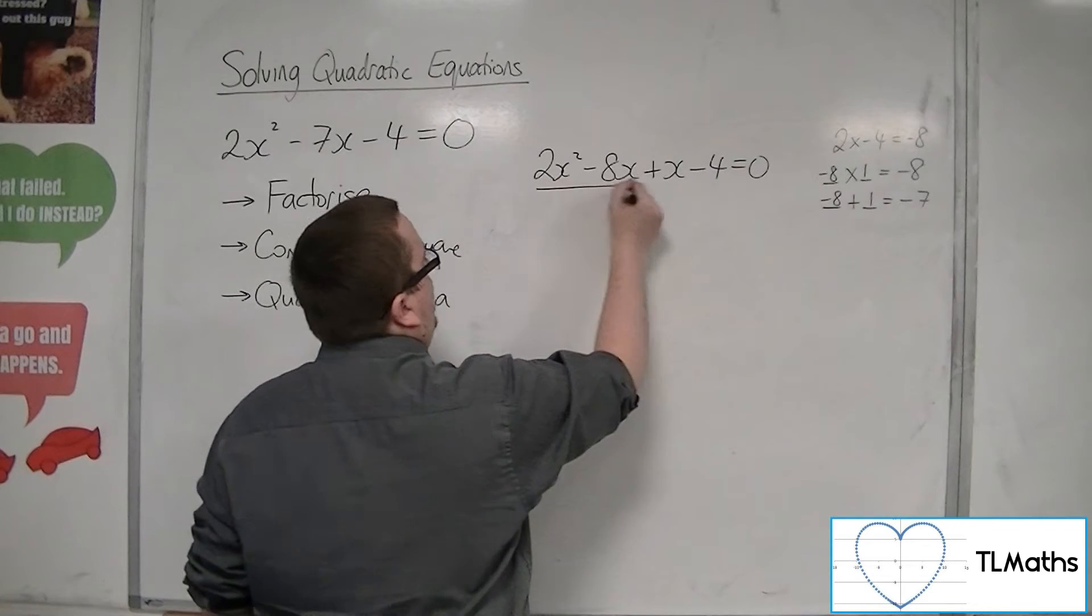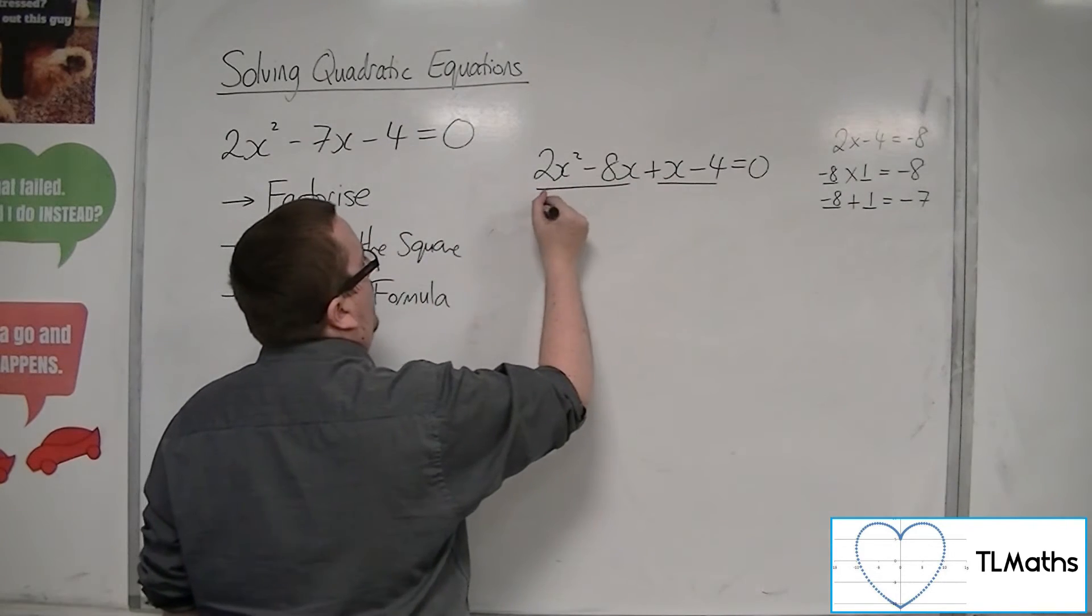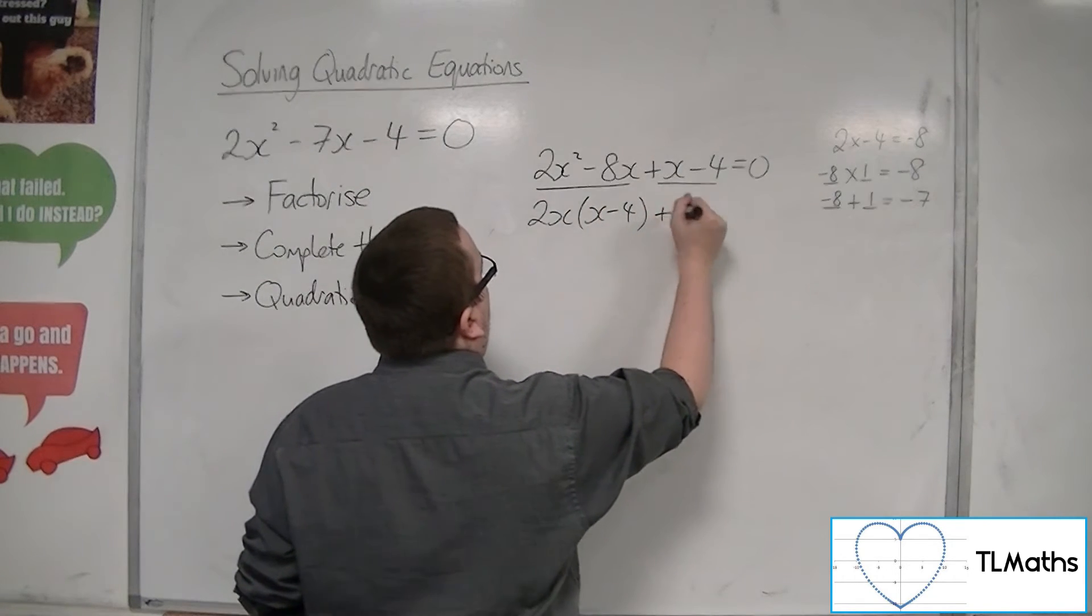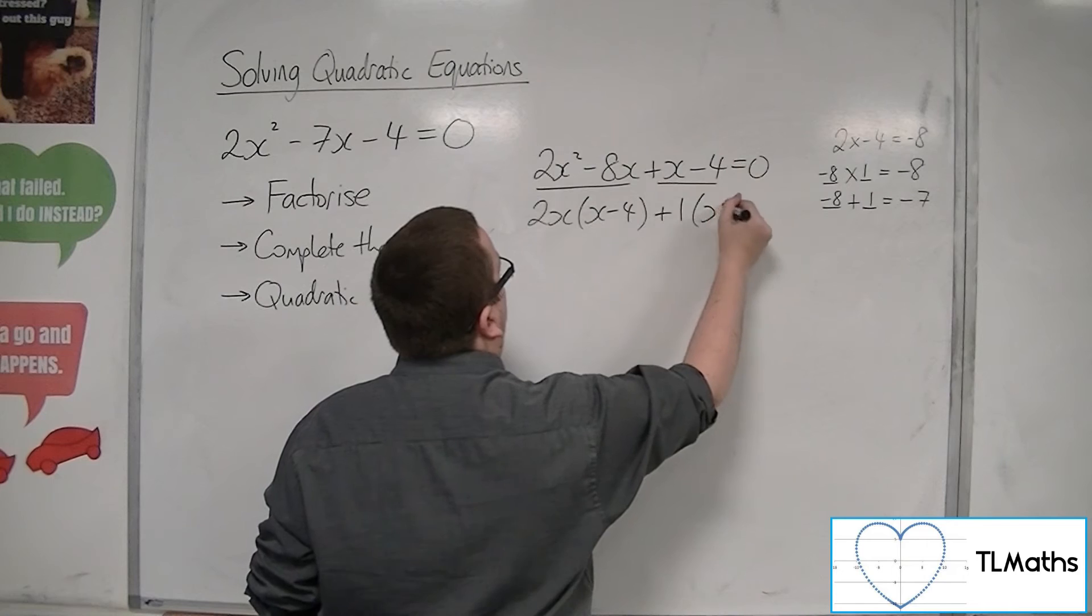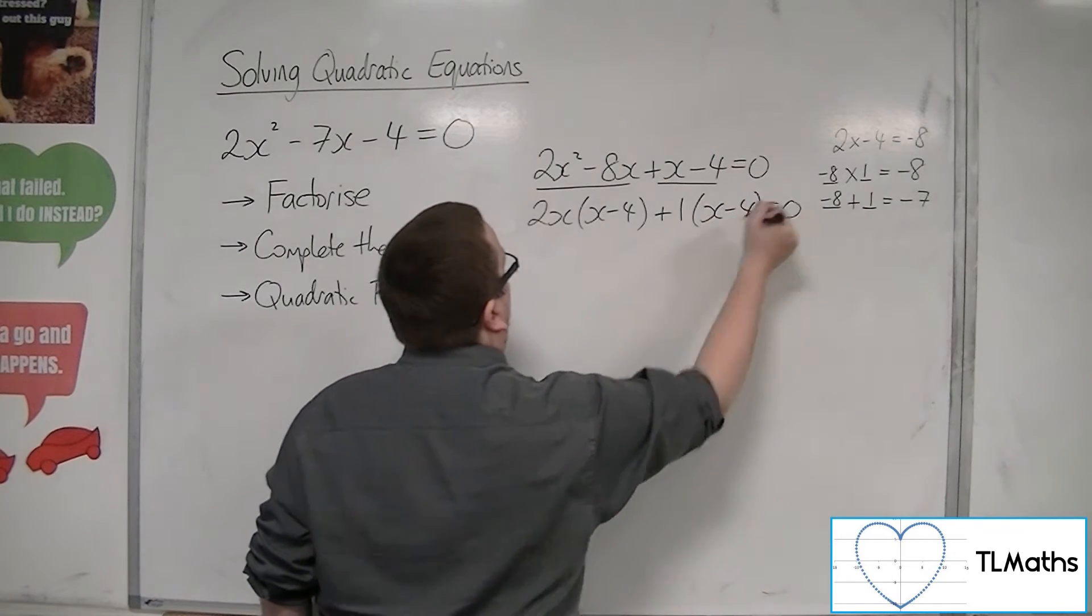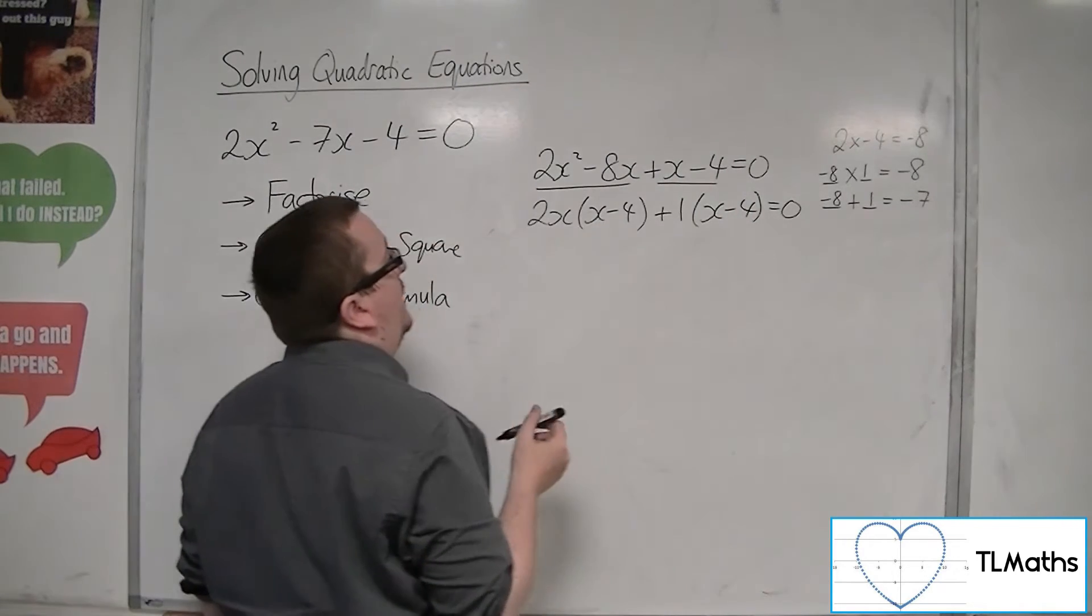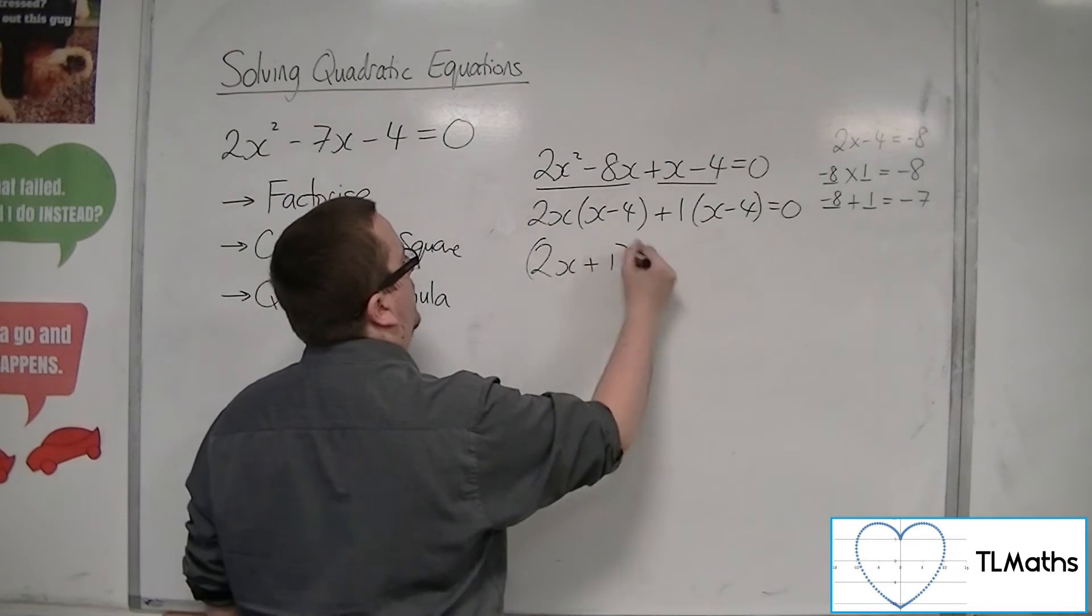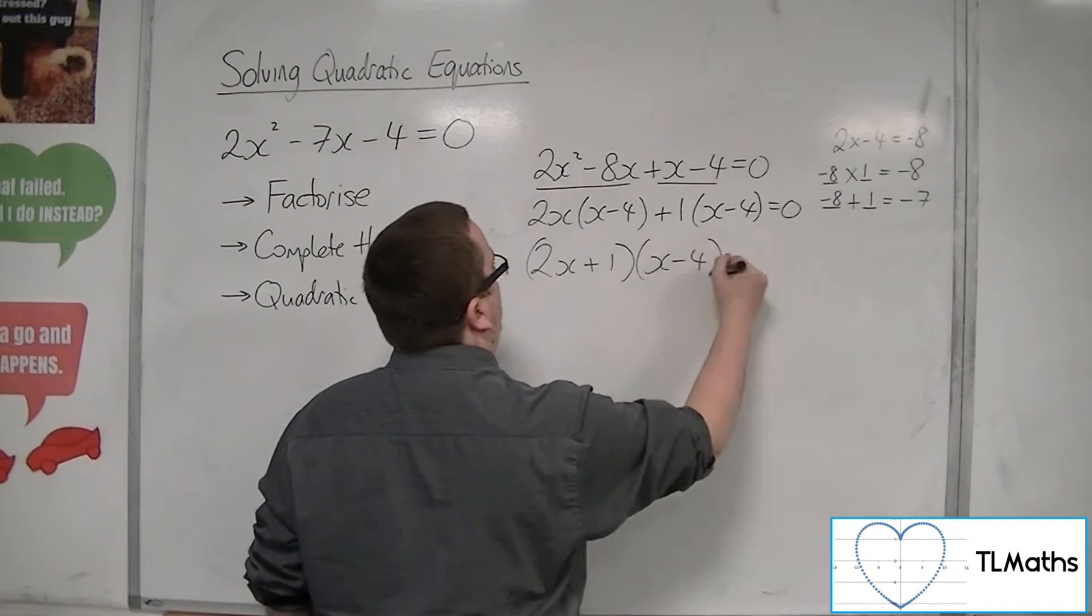We then factorise both halves. So we can pull out 2x and then x minus 4. And here we can only pull out a 1. There's only 1 that is common as a factor of both. So we have 2x plus 1, x minus 4 equals 0.